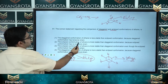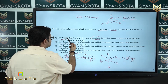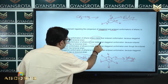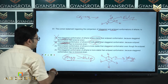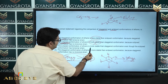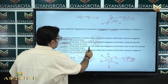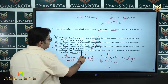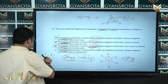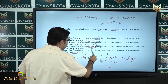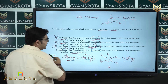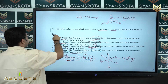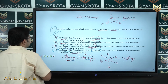Always remember: the staggered conformation is more stable than the eclipsed conformation. Option 1 says staggered is less stable — no, staggered is more stable. Option 2 says eclipsed is more stable — no, that is incorrect. Option 4 states the staggered conformation of ethane is more stable — yes, that is true, and it has lower torsional strain. Option 4 is the correct answer of question number 81.